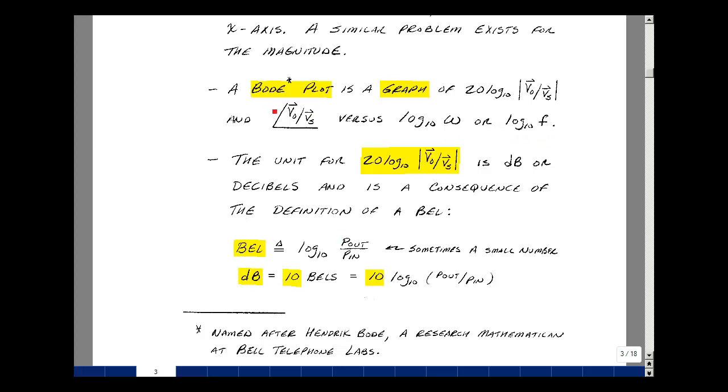This is named after Heinrich Bode. He was a mathematician at Bell Telephone Labs and came up with a technique for sketching large changes in frequency by just using some simple straight line segments. And the answers are fairly close without computing the numerical values specifically. We're going to plot the magnitude by multiplying the log base 10 of that ratio times 20, and that's called a decibel or just dB. This is a consequence of a definition called a Bell, named after Alexander Graham Bell, which is the log base 10 of power out over power in.